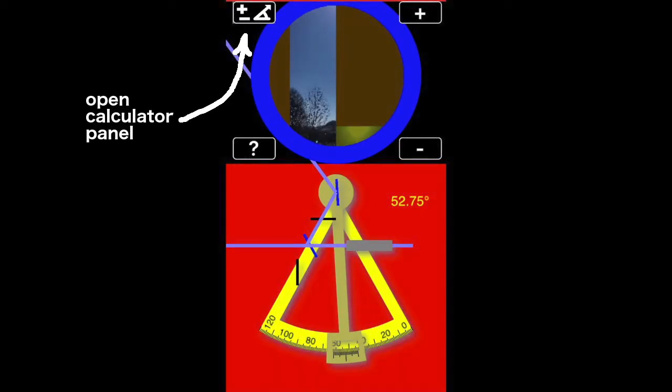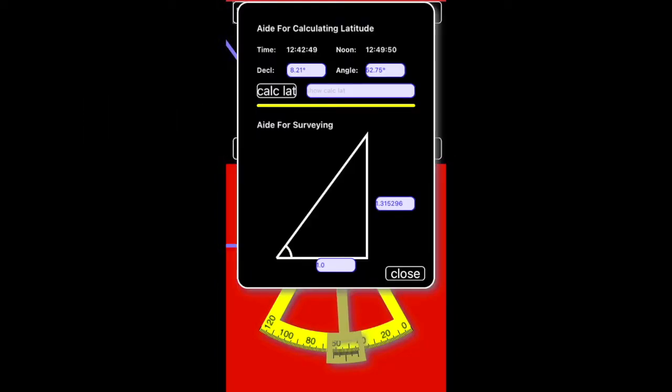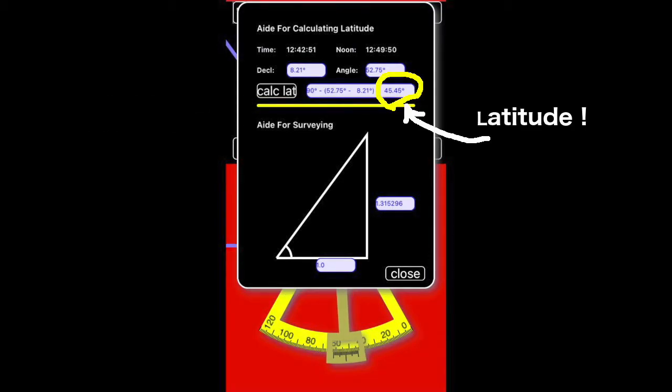Now open the calculator panel and then tap the calculate latitude. And there's your latitude.